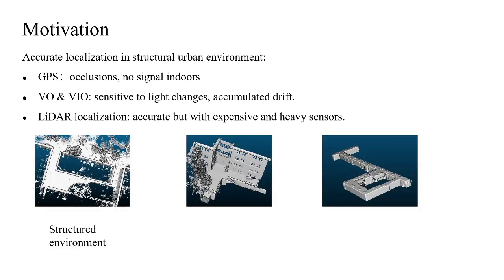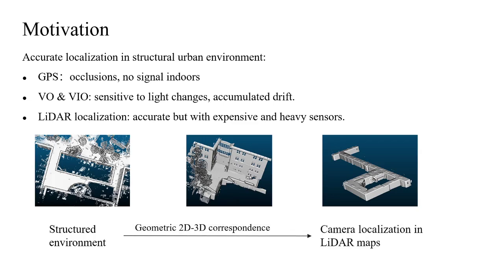For this kind of urban environment, the geometric structures are relatively time invariant. So our goal is to directly establish geometric 2D-3D correspondence, which can be used for accurate localization in LiDAR maps. The major challenge is how to find this kind of 2D-3D correspondence to overcome the appearance differences and the modality gap.